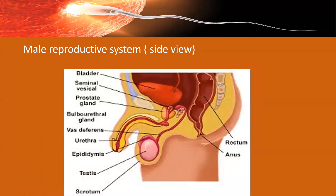This is the side view, and you can observe the same structures here as well. Notice the urinary bladder and the location of these organs with reference to it. You have to do practice of these diagrams also.